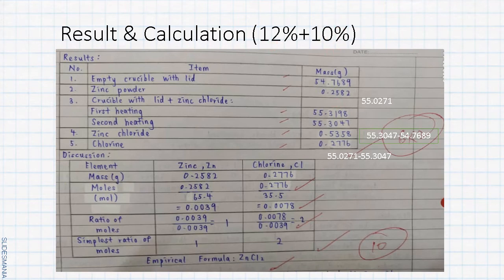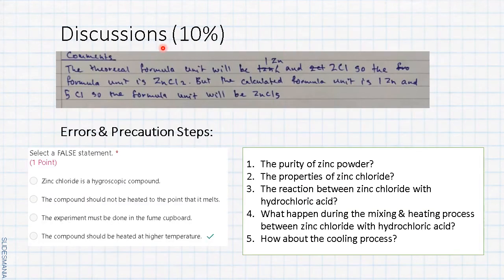Next, for the discussion worth 10 marks. First of all we need to comment. This answer is different among you depending on your result. For this student the theoretical formula is ZnCl2, but what he got is ZnCl5. It doesn't matter if you get the wrong result, you just state it, and you will get one mark.